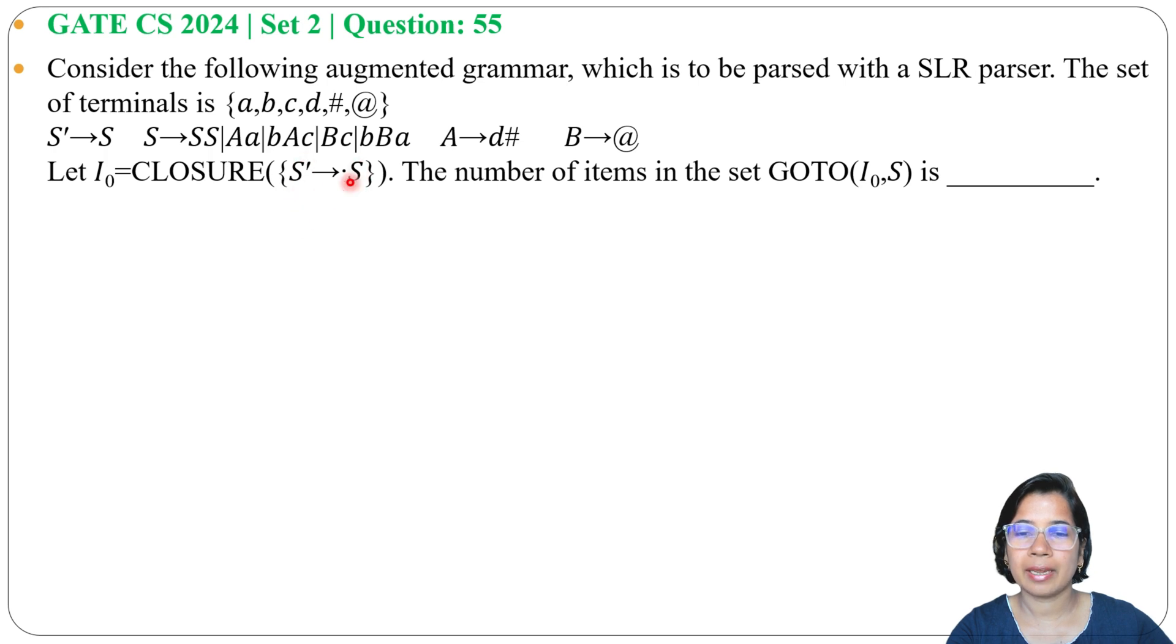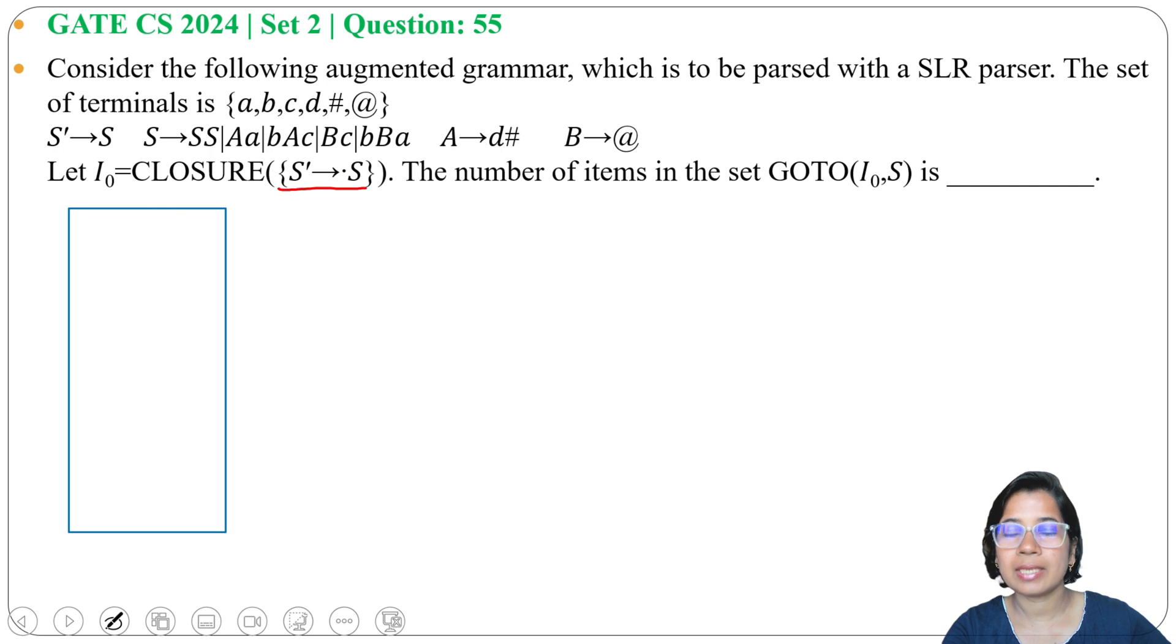S' → •S. The number of items in the set GOTO(I₀, S) is... So first, I will write I₀. I₀ is CLOSURE of S' → •S. So S' → •S, that's